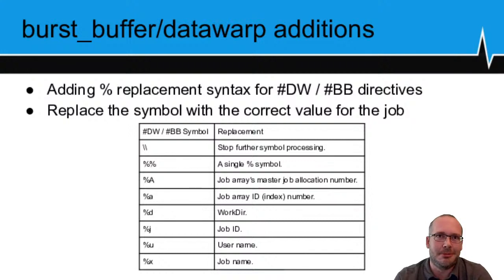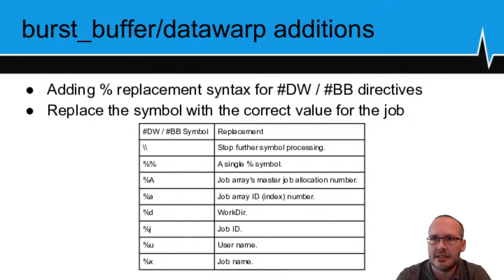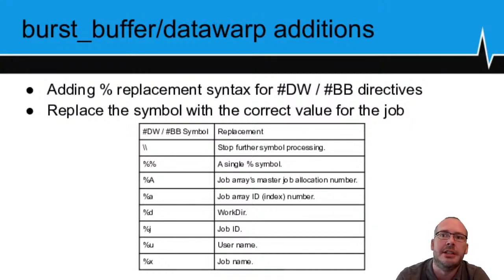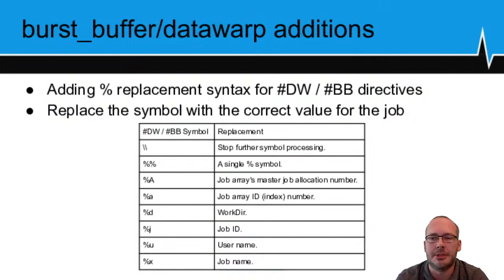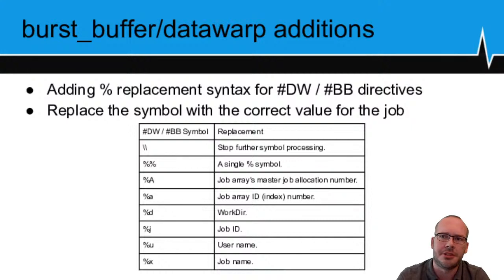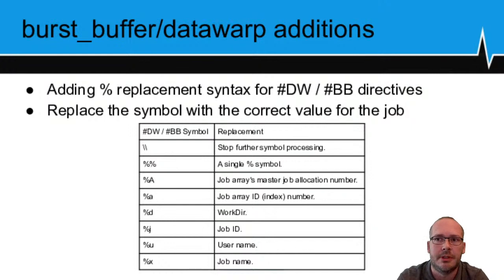On to Burst Buffer Data Warp. We added some of the percent substitution characters that you've long been able to use for standard out, standard error, and standard in file name patterns within Slurm. This makes it easier for sites using burst buffer to swap in the job ID, job array ID, username, and other details into file name patterns automatically, so you can have a consistent submit script but have output files moved to a directory matching details of that specific submission.